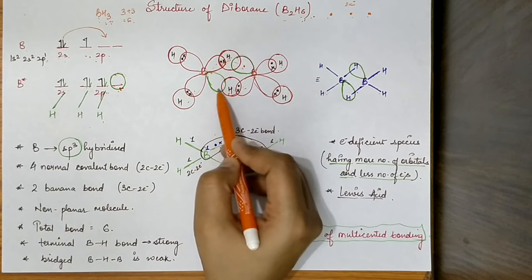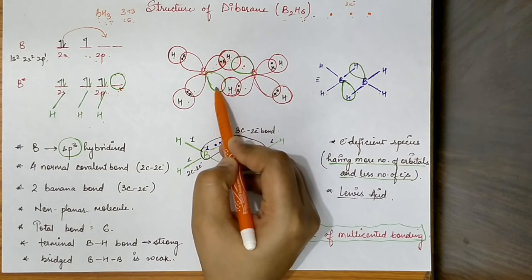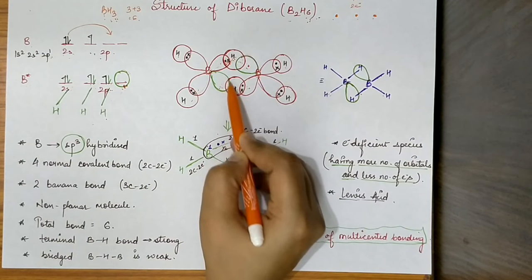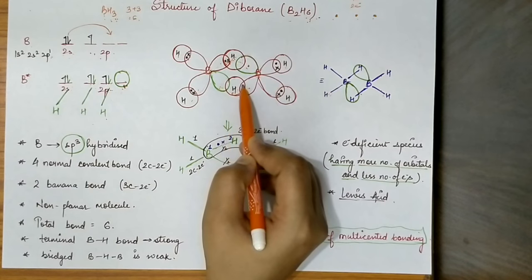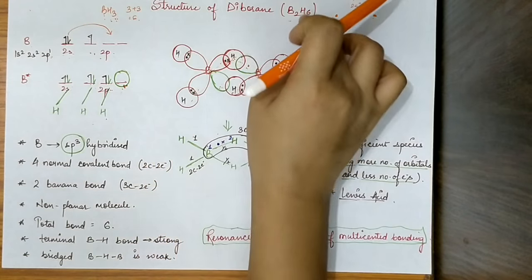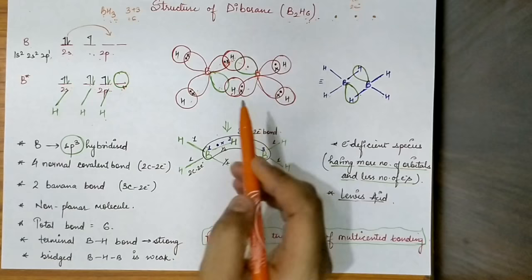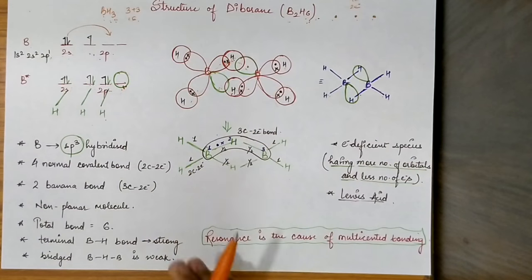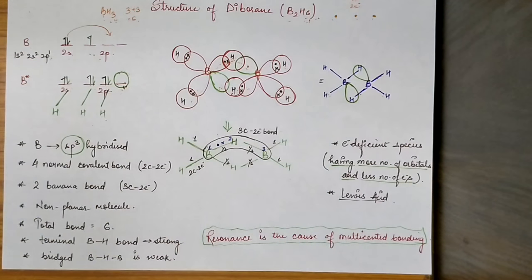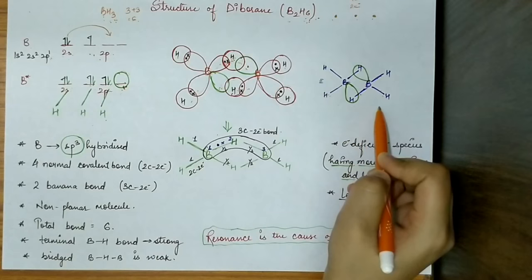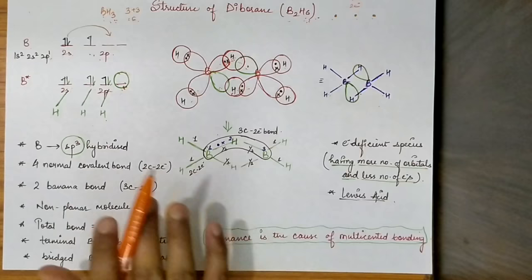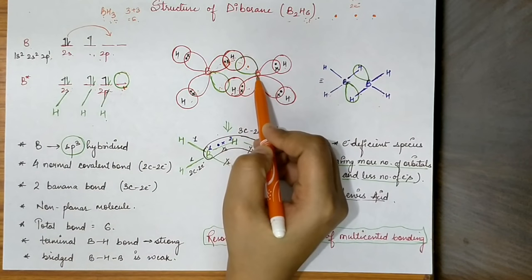The unhybridized P orbital shown in green is the vacant orbital. This undergoes resonance with the other unhybridized P orbital. Resonance structures stabilize the molecule, making B2H6 more stable. That is why BH3 is not known but B2H6 is. You can see that we have three normal covalent bonds in this structure.